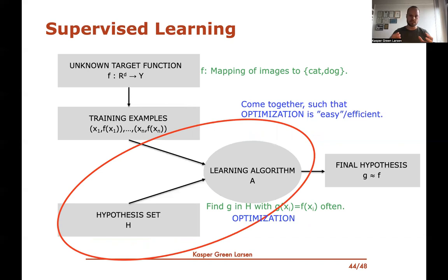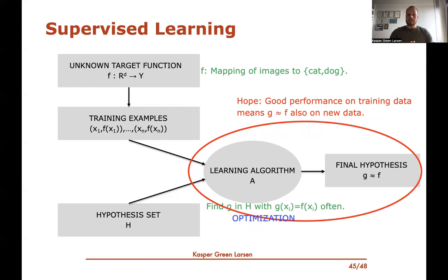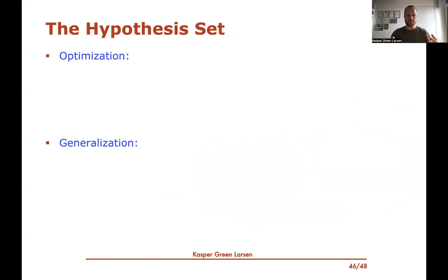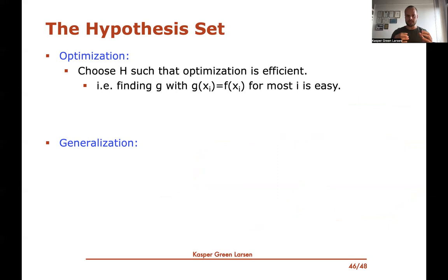The second part I mentioned is the hope that once you've found a hypothesis that does well on the training data, then hopefully it also does well on new data — and this part is called generalization. There are two concepts: optimization and generalization. In the optimization part, we choose a hypothesis set such that we can efficiently look for a good hypothesis — we can quickly find one that does well on the training data, correctly predicting most of the training labels.